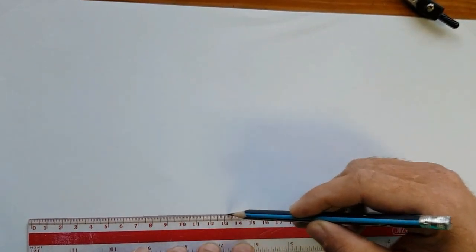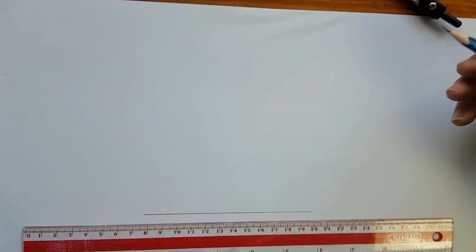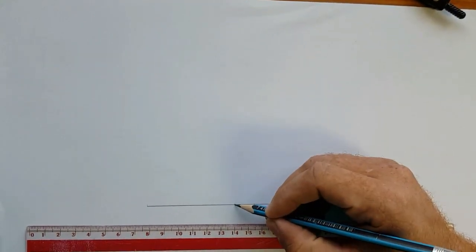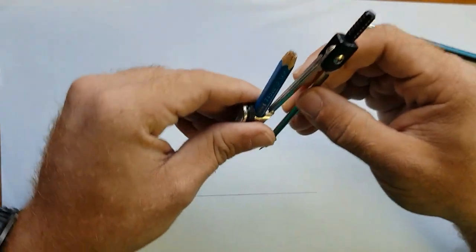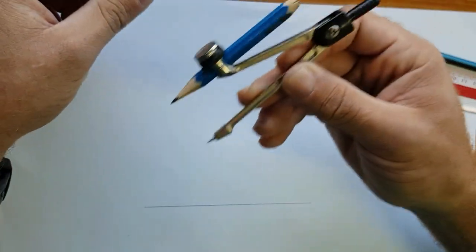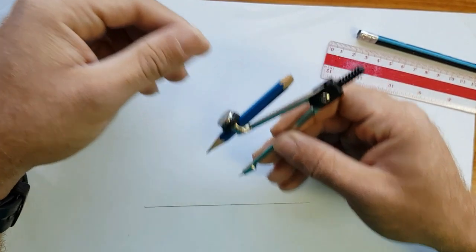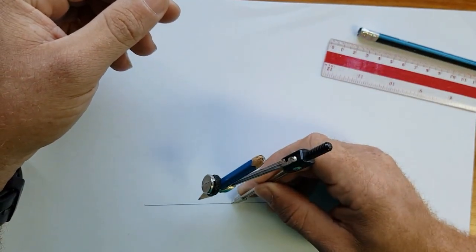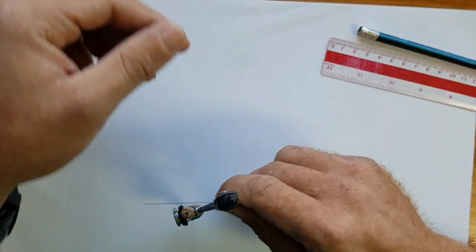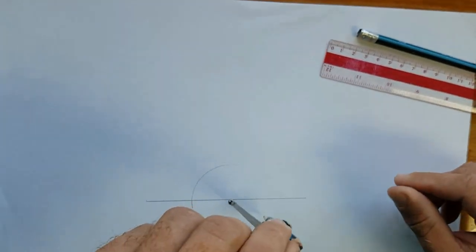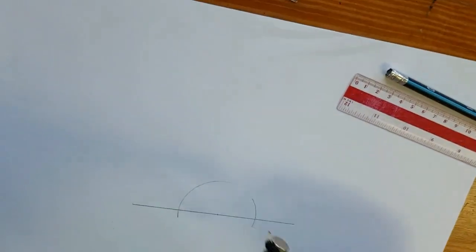First, we draw our baseline. We highlight our vertex. We take our compass and open it to any length you desire. Putting the point of the compass on the vertex, we draw a semicircle.